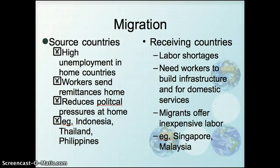With that unevenness of development, it's easy to see why migration is a major factor within Southeast Asia. Source countries have high unemployment, and workers want to go work in other countries to send remittances back to their families, which also helps reduce political pressures at home. It's a major factor in Indonesia, Thailand, and the Philippines. Receiving countries have labor shortages and need workers to build infrastructure and for domestic services, and migrants often come in with few rights and are easy to exploit — you see this in places like Singapore and Malaysia.